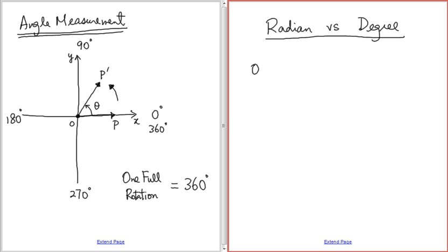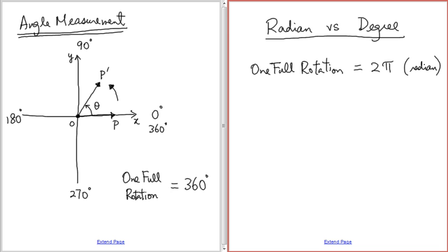One full rotation in radians is 2 pi. When we talk about degrees, we write the little circle on the superscript. When we have radians, you actually don't need to write any unit — it's assumed to be radian. So whenever you don't see any unit, it is indeed talking about radian.